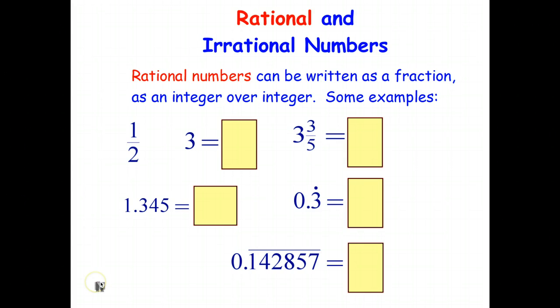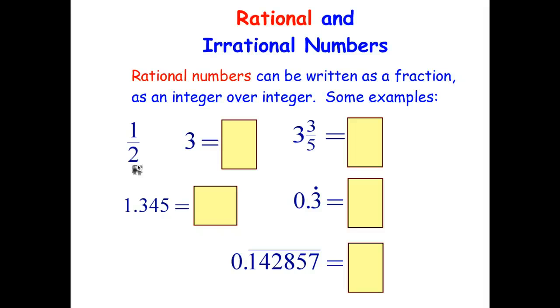Rational numbers: a rational number is any number that can be written as a fraction — an integer over an integer. So for example, one half is a rational number; it can be written as 1 over 2. Because integers can be negative, we could also have a fraction such as negative 3 over 5 as a rational number.